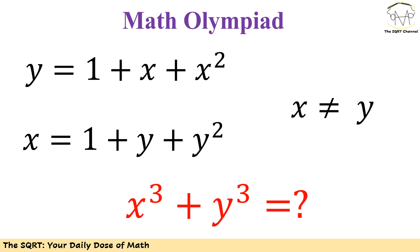We have y equals 1 plus x plus x squared and we have x equals 1 plus y plus y squared. Since we have similarity here, the problem says x and y are not equal. That's very important to notice.